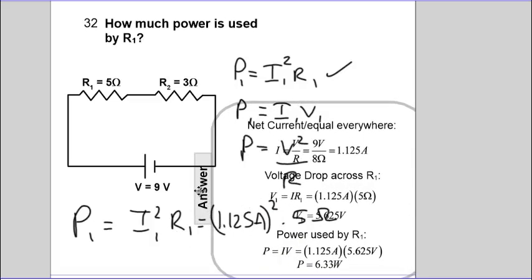And that's the meaning of power, or the power output, is that you get 6.33 joules of energy out every one second that goes by.